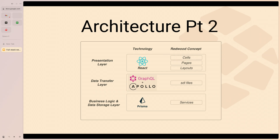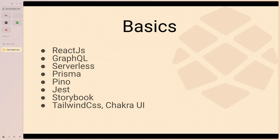On the presentation layer you've got React. On the data transfer layer you've got GraphQL and Apollo Server. On the business logic layer you've got Prisma, which can talk to MongoDB and many relational databases. ReactJS is a way to build web components — there are also versions that let you build mobile components — but it's basically a UI library.